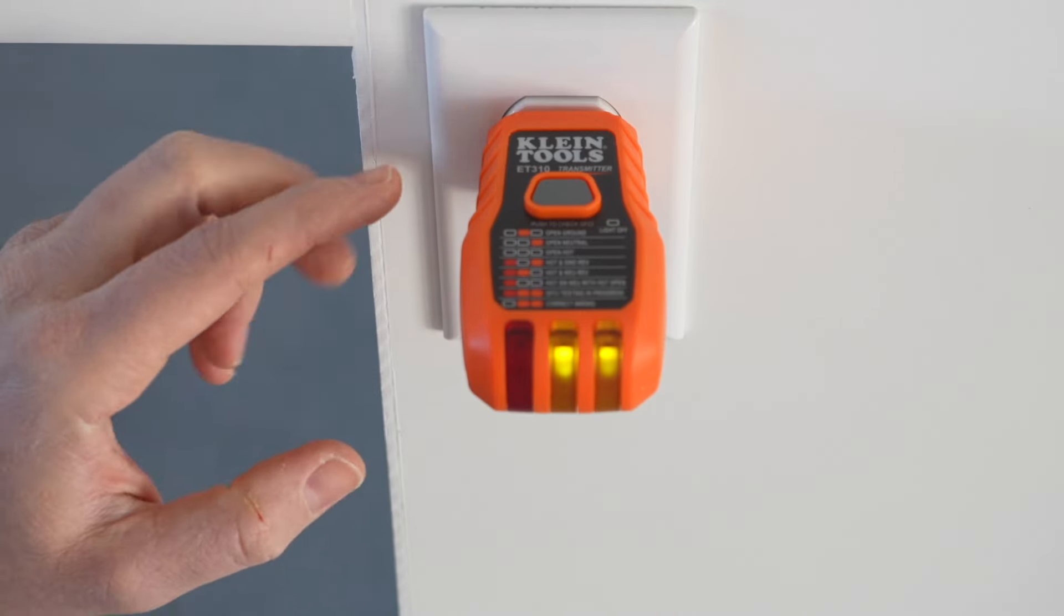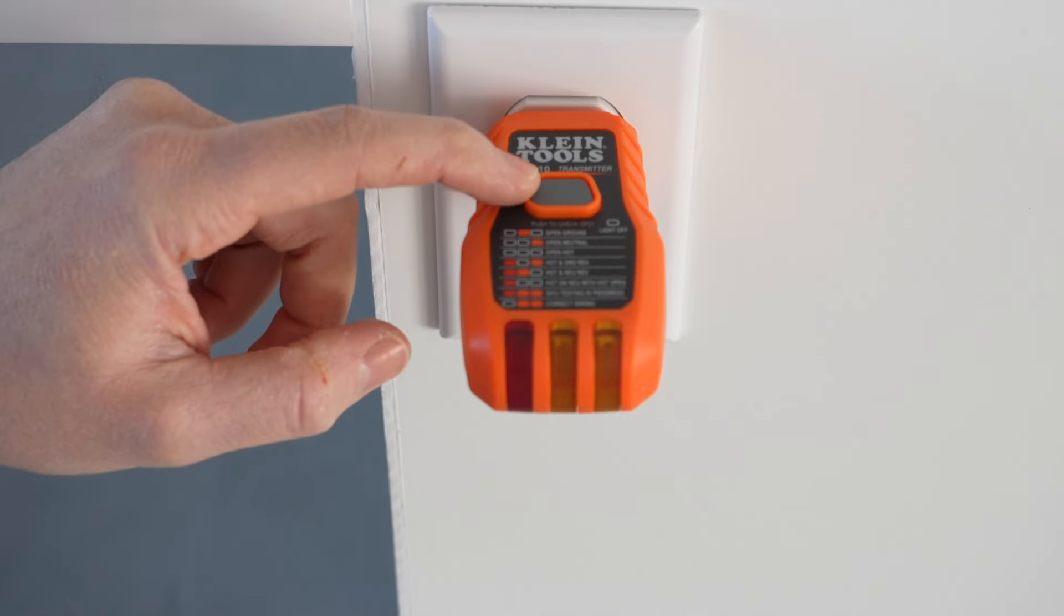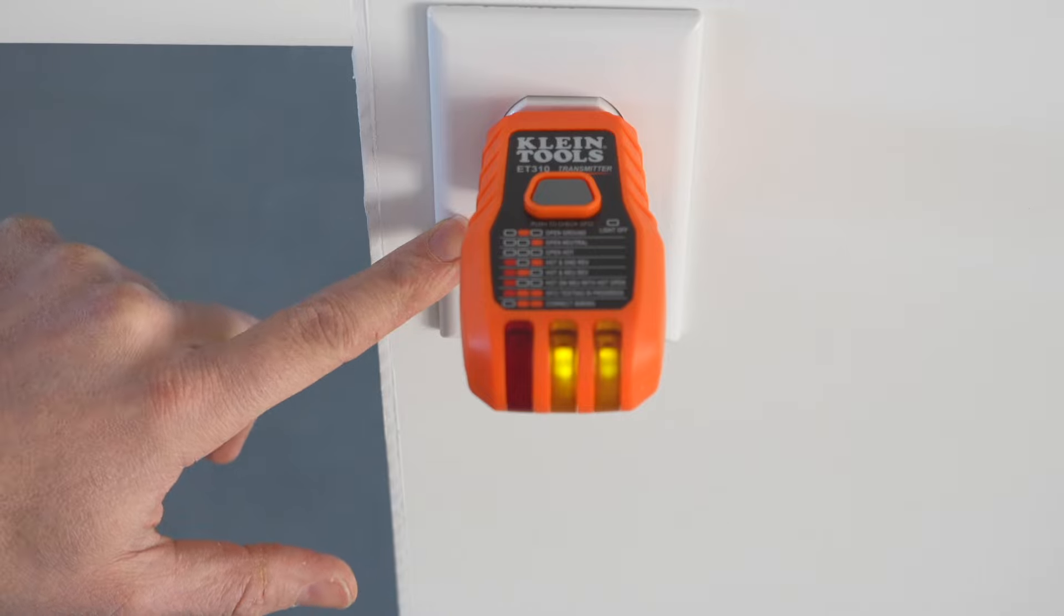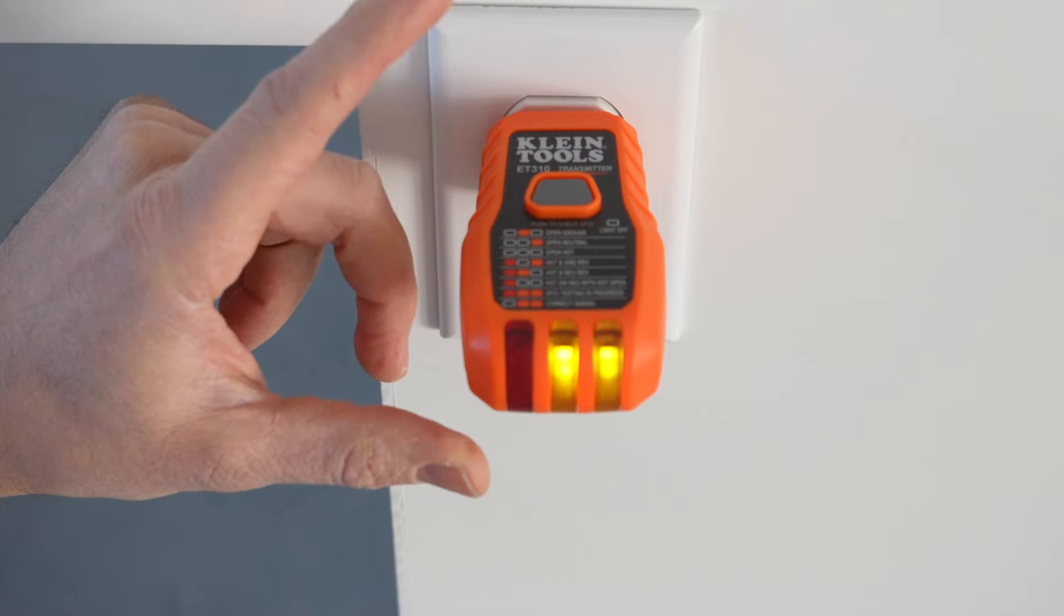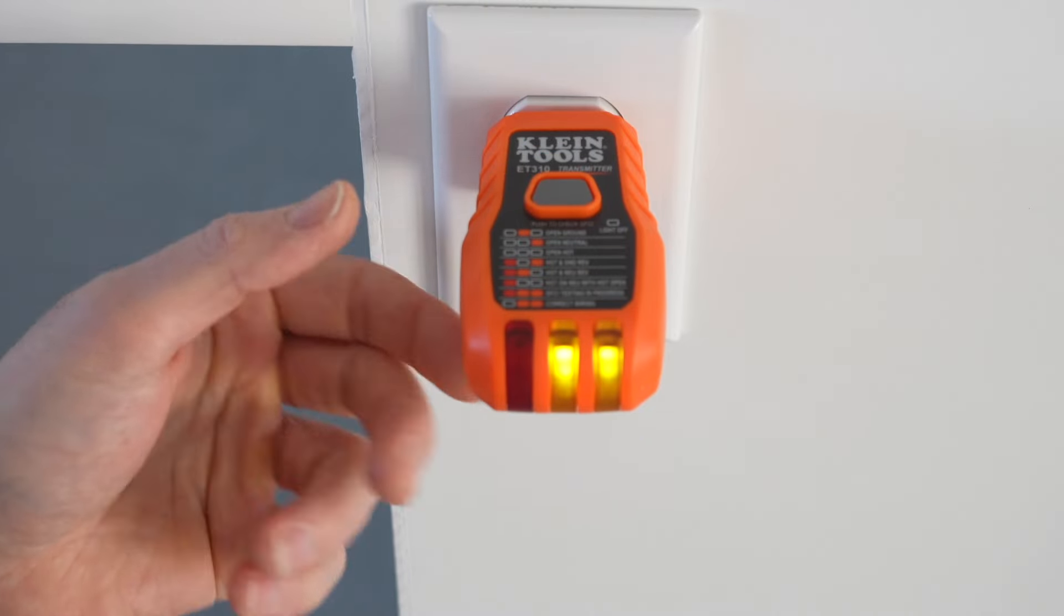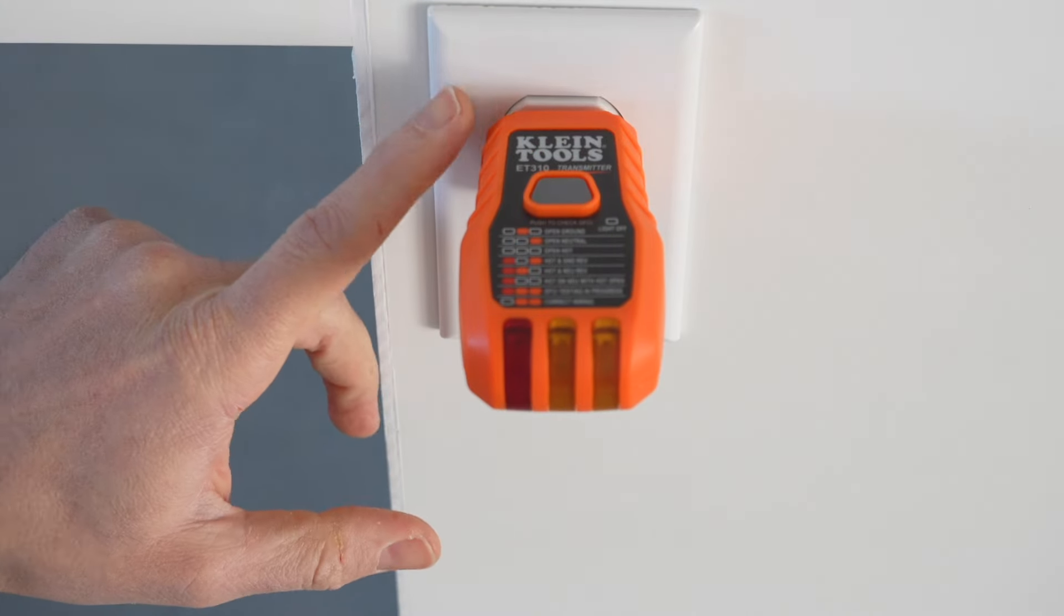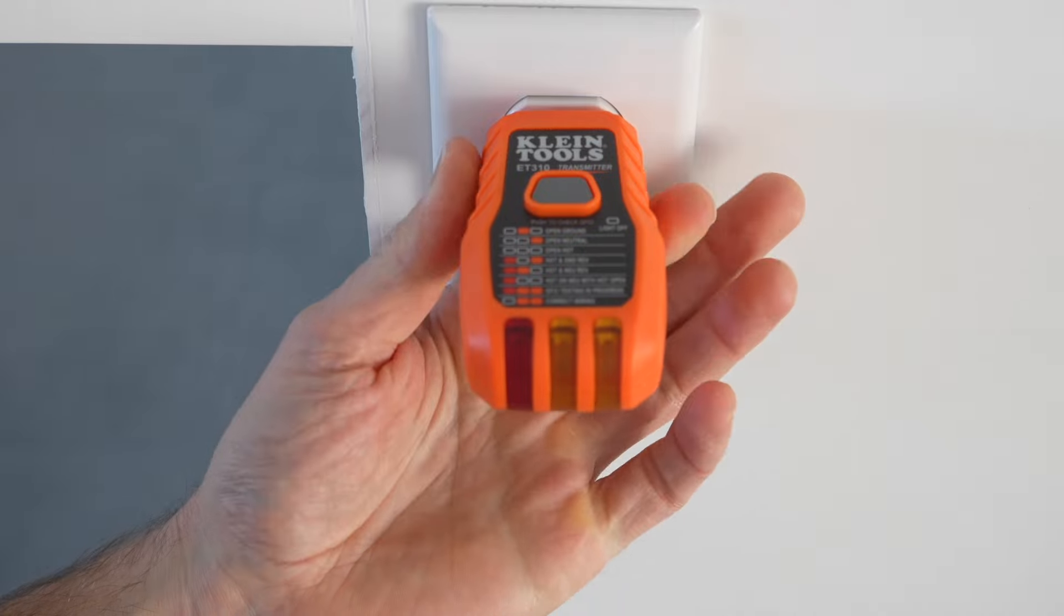So because this is a GFI protected circuit, if we press this button, it's going to short out the circuit. And if this circuit was not GFI protected, if we press this button, it won't do anything and it won't trip it. So if we press it now, it kicked the breaker and it is correctly wired and it is GFI protected.